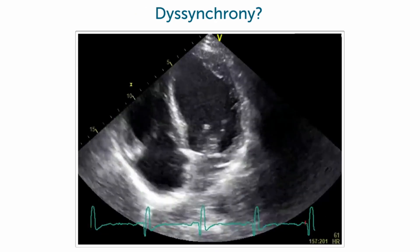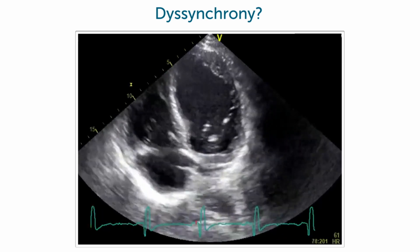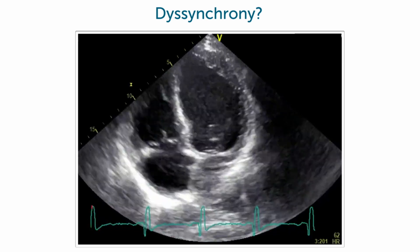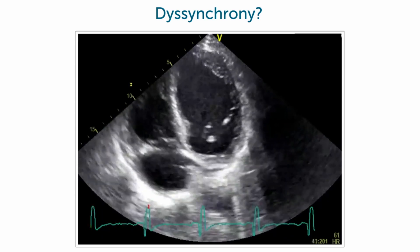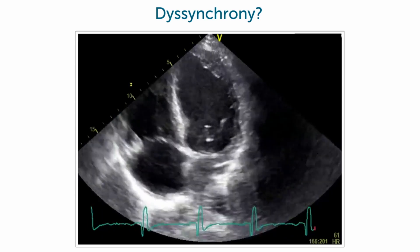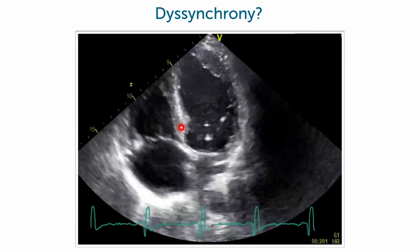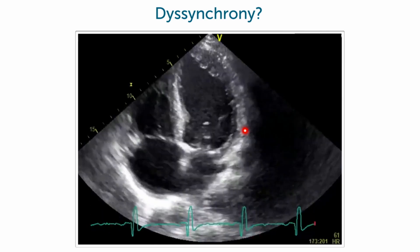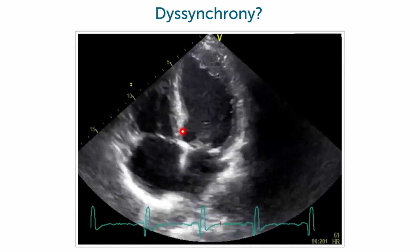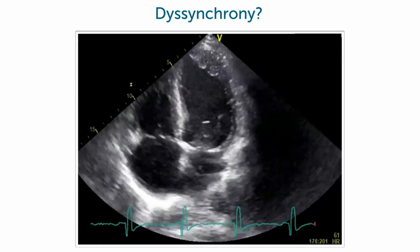What about this next example? I'll give you some time to take a look. This ventricle definitely looks different than the one before, but if you look at this level, you will note that the septum and the lateral wall contract at the same time. So this is a synchronous ventricle.